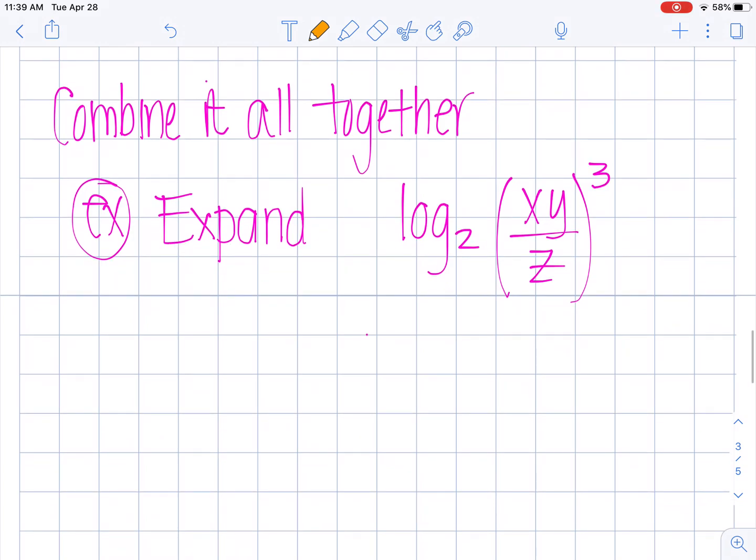Lastly we're going to combine it all together. Here's a problem where we're going to be using expanding that has all three rules. First thing I'm going to notice is that I have a 3 here. I'm going to take this 3 and I'm going to move it out in front like this. So this becomes 3 times a log of x times y divided by z. I moved my exponent down. Now I notice that on the top here I have multiplication, and then I also have a division. So I'm really combining them all together.